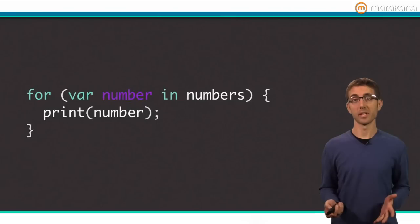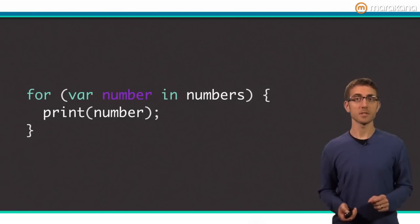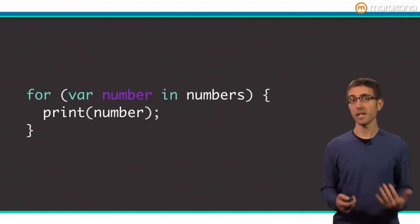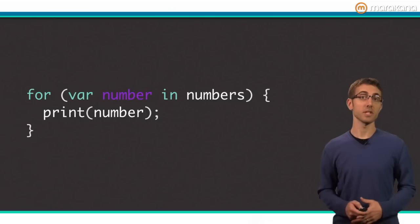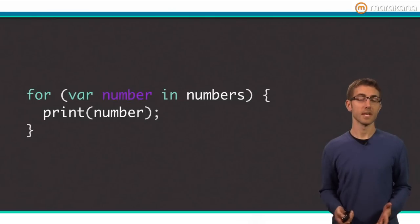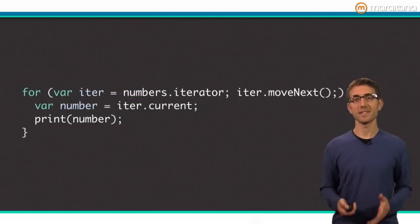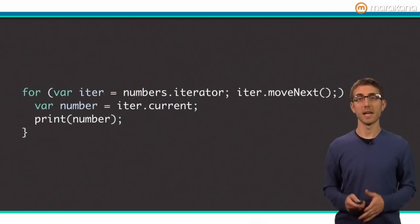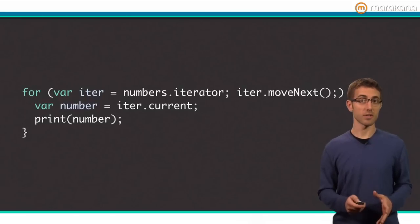We're talking about iterable here, so let's iterate. Iterable objects play nicely with for in loops because they can generate iterators. Here's an example of a for in loop using an iterable. You can think of the for in code as syntactic sugar for this code. Notice how a new iterator is created and move next is called for every iteration. The current value from the iterator is accessed and printed.